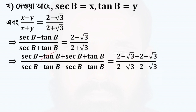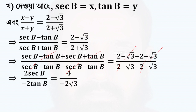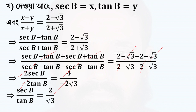We can consider minus root 2b. Then minus tan b plus tan b, minus sec b plus sec b. Now we have root 3, root 3 minus 2, plus 2. 2 sec b by minus 2 tan b, and we have 4 by minus 2. So we get minus 2, so sec b by tan b equal to 2 by root 3.